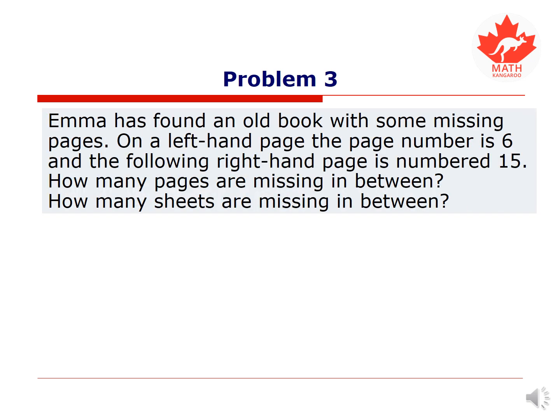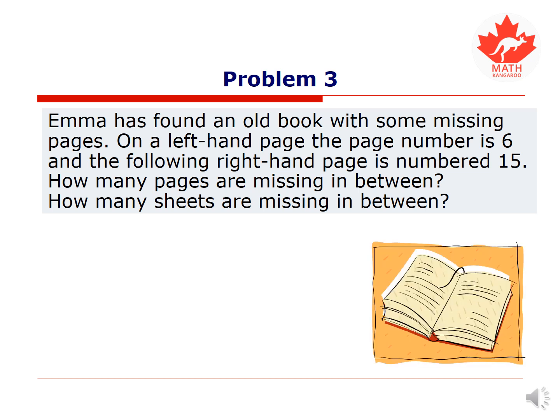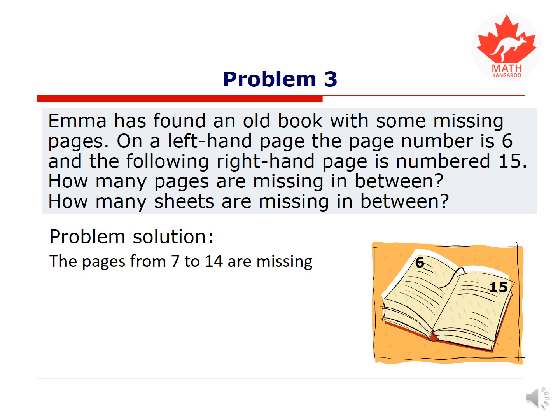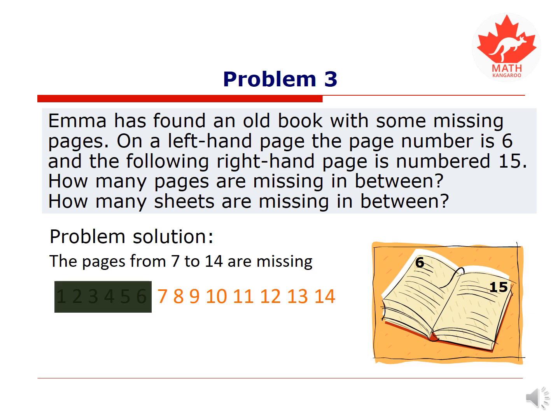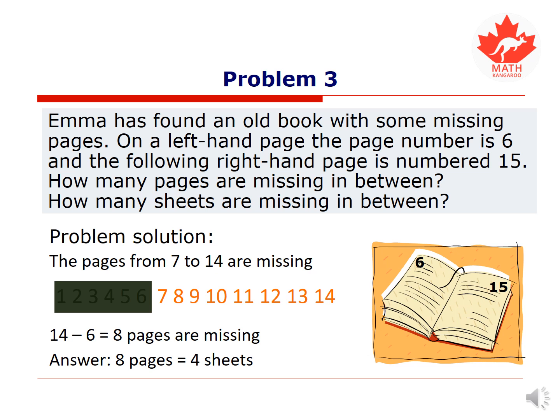Problem 3. Emma has found an old book with some missing pages. On the left-hand page the page number is 6, and the following right-hand page is number 15. How many pages are missing in between? How many sheets are missing? The pages from 7 to 14 are obviously missing. We subtract 6 from 14 to obtain 8 missing pages, or 4 missing sheets, because every sheet has 2 pages on it.